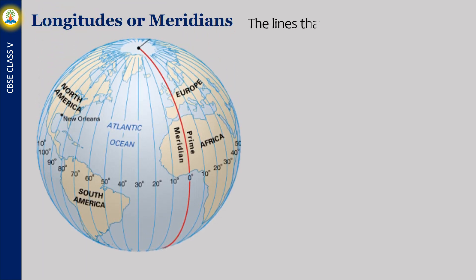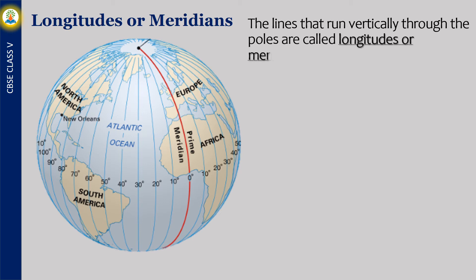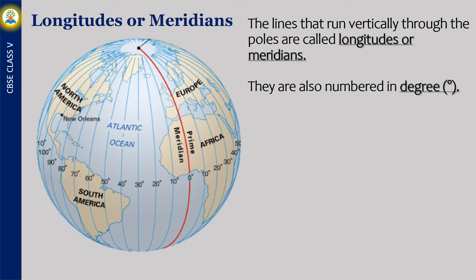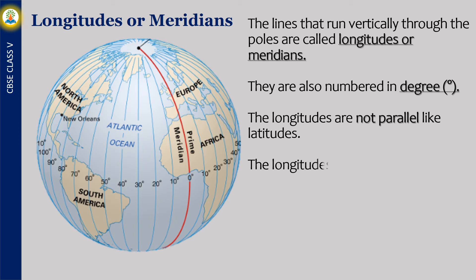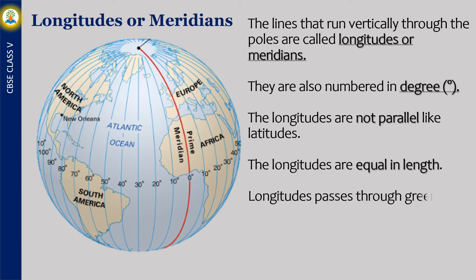The lines that run vertically through the poles are called longitudes, or meridians. They are also numbered in degrees. The longitudes are not parallel like latitudes. The longitudes are equal in length. The longitude that passes through Greenwich, where the British Observatory is located, is called the prime meridian.